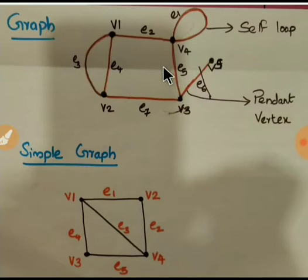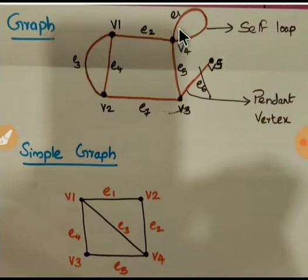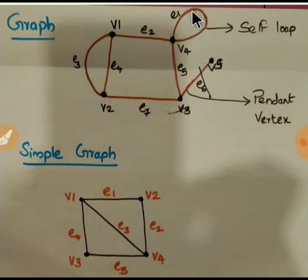That is about the definition of a graph. Now in this graph, when you look at it, you can see the peculiarity of edge E1. E1 starts from vertex V4 and ends in vertex V4. Such an edge is called a self-loop — an edge having the same end vertices.